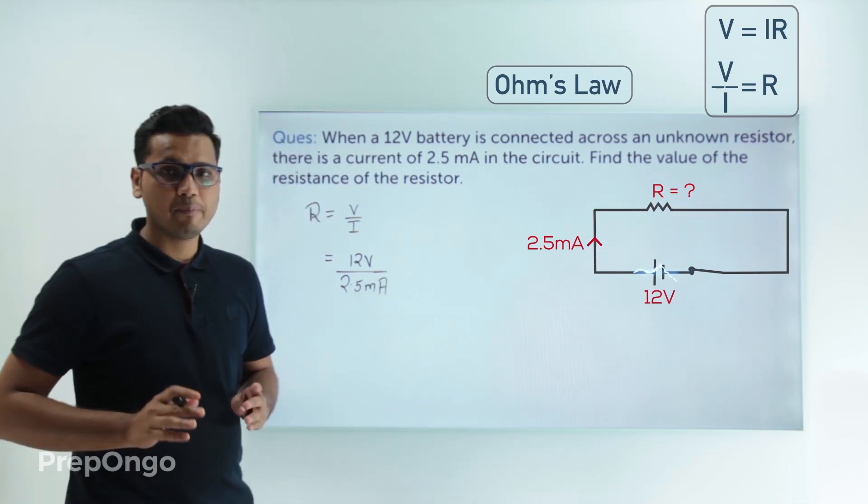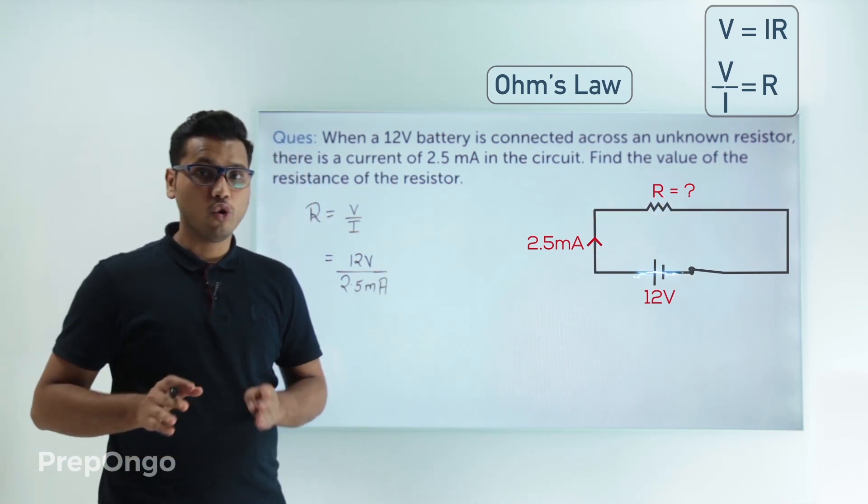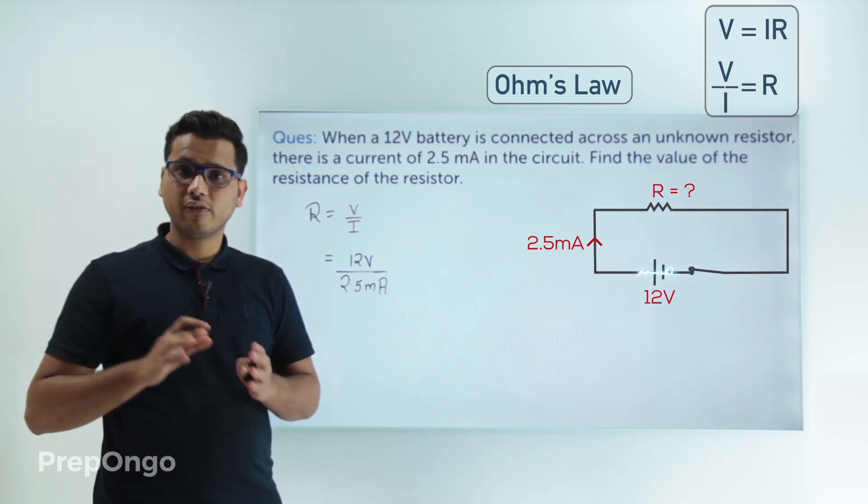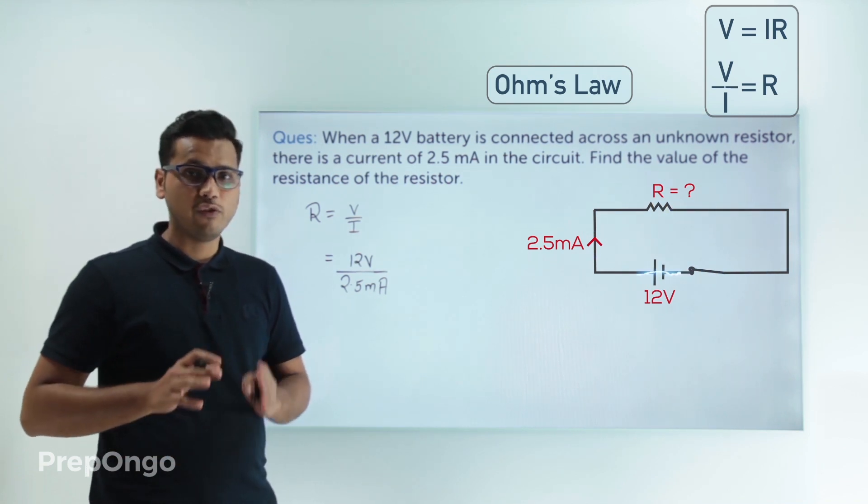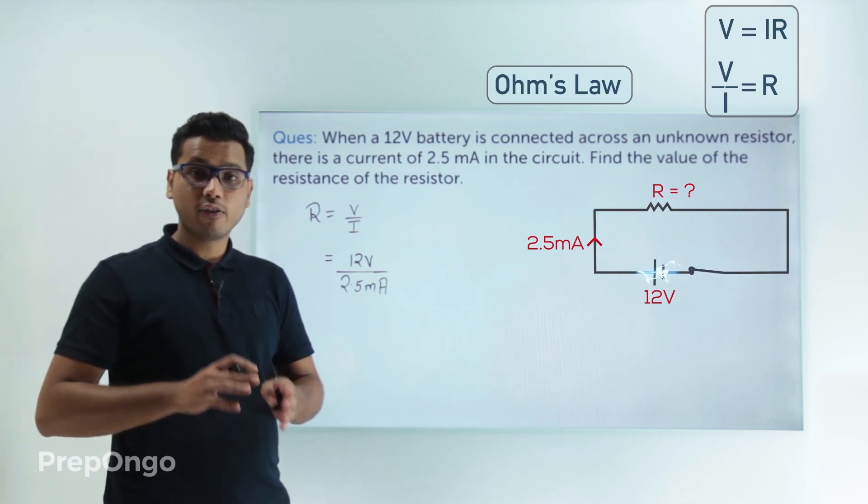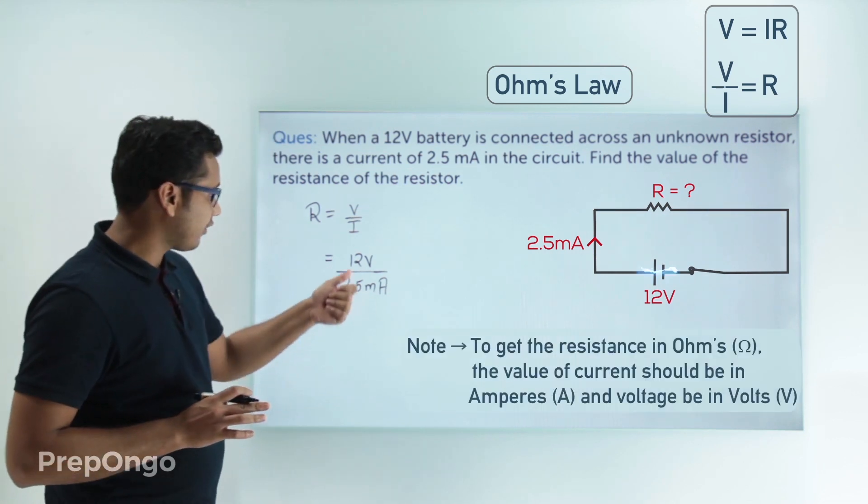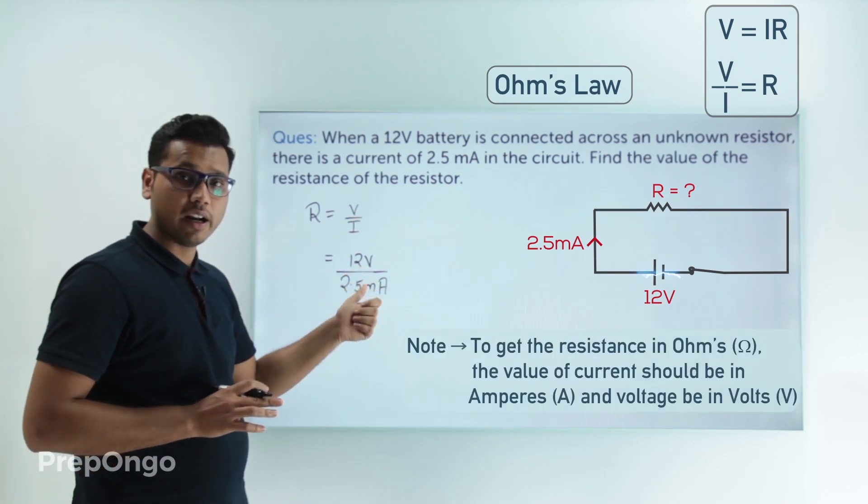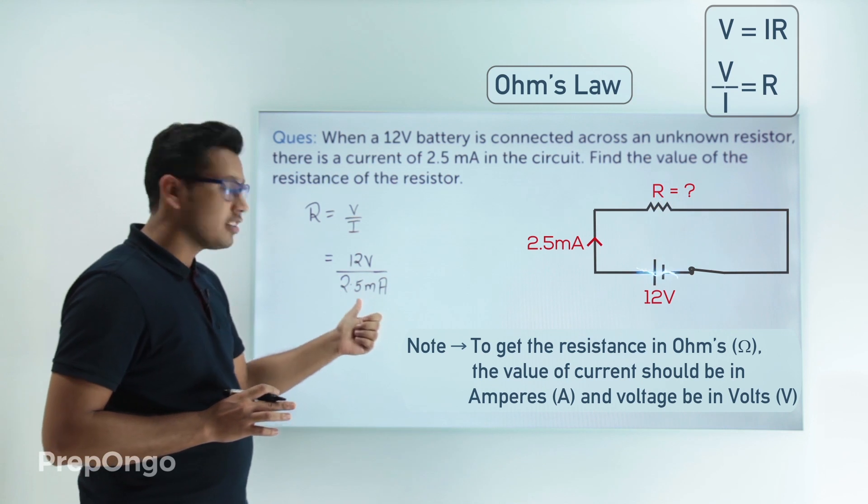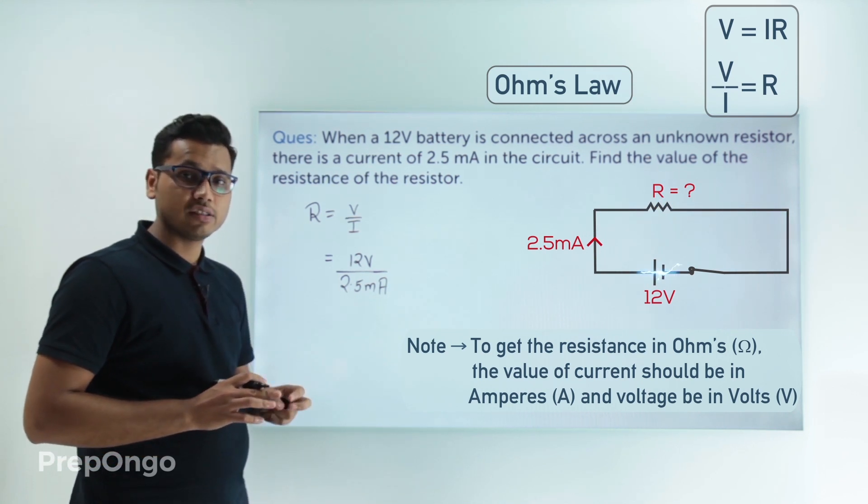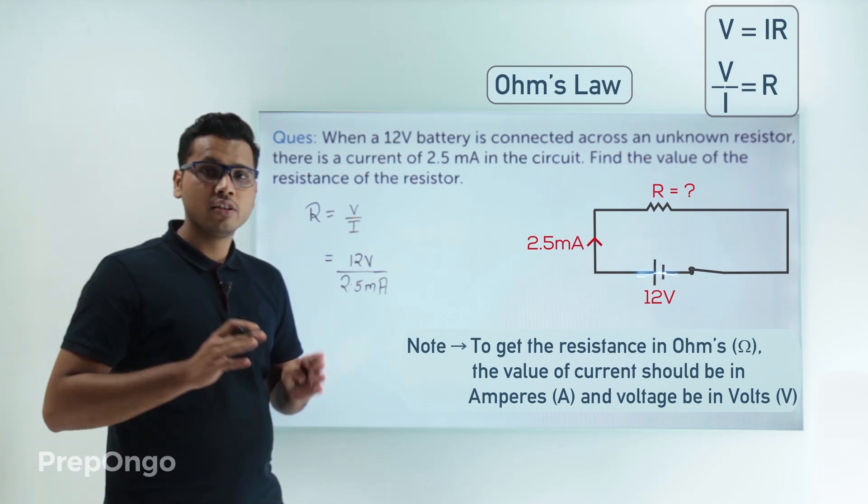Just remember that we get the value in ohms when the value of potential difference or the value of voltage is in volts and the value of current is in amperes. If we look at this case, the value of voltage is in volts but the value of current is not in amperes. So let's first convert it to amperes and then we will get the value in ohms.